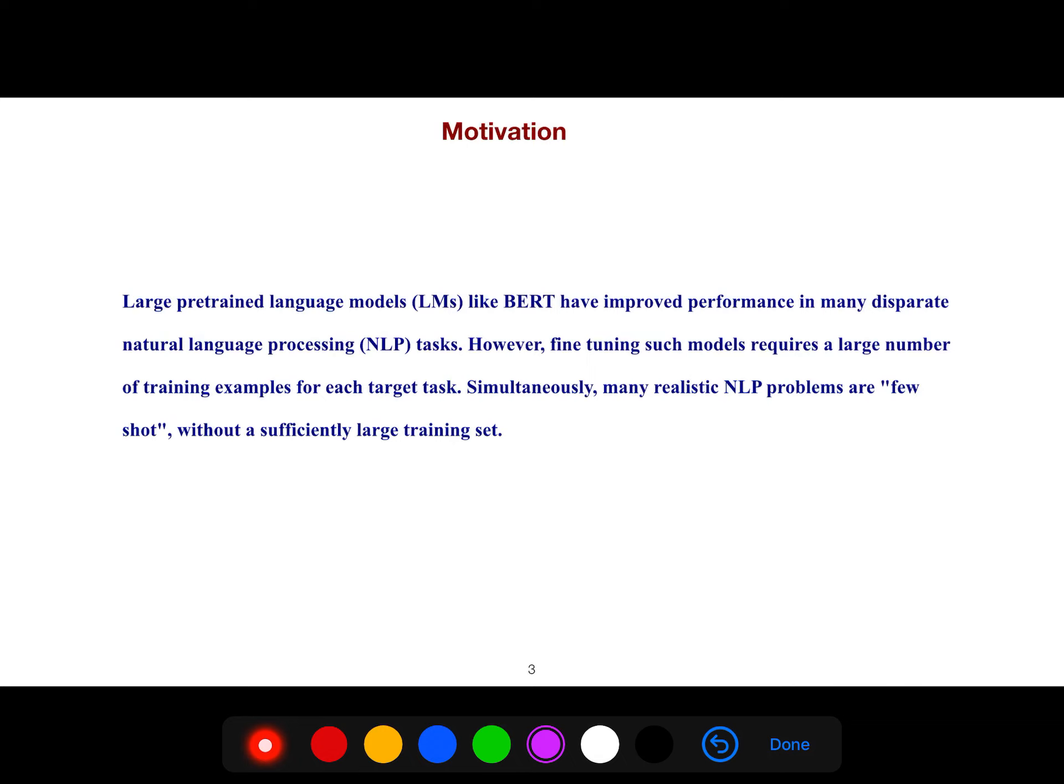Large pre-trained language models like BERT have improved performance in many disparate natural language processing tasks. However, fine-tuning such models requires a large number of training examples for each task. For example, in biomedical text, legal domain, or any domain, it's very expensive to create labeled data. So we have to learn from just a few shots, very few examples. That's why we need few-shot learning.